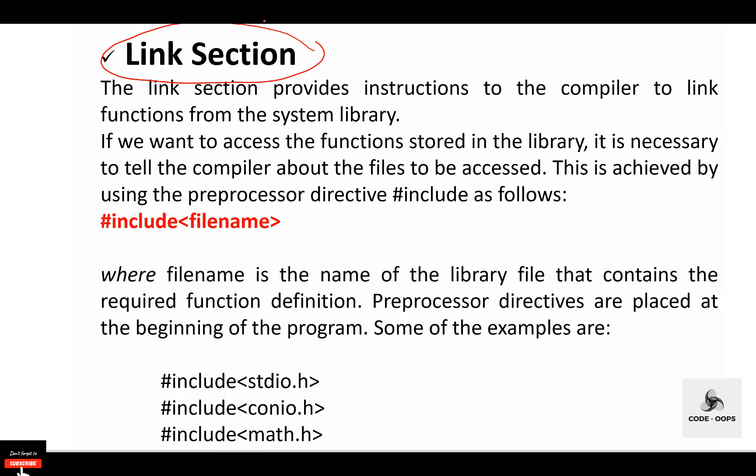The next is the link section. All header files are included in this section. A header file is a file that consists of C declarations that can be used between different files. It helps us use other code in our files. A copy of these header files is inserted into your code before compilation. If you want to access the functions stored in a library, it is necessary to tell the compiler about the files to be accessed. This is achieved using the preprocessor directive #include. Preprocessor directives are always placed at the beginning of the program.